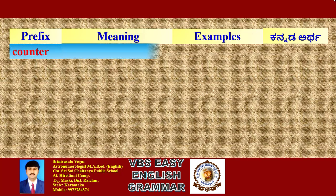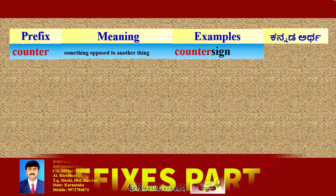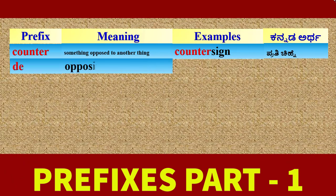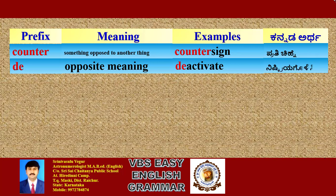Prefix 'Counter': its meaning is 'something opposed to another thing'. Example: Countersign. Kannada meaning: Prathichane. Prefix 'De': its meaning is 'opposite meaning'. Example: Deactivate. Kannada meaning: Niskraya Goli.